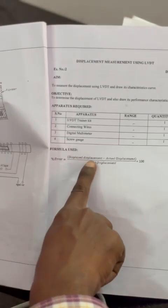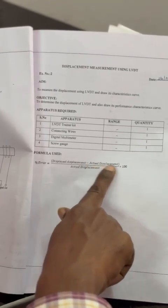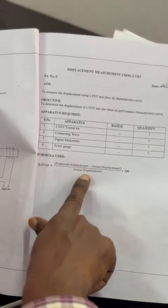We can repeat the experiment till 0. After taking these readings, which are tabulated in the column, we can calculate the error using the formula: displacement minus actual displacement divided by actual displacement times 100.